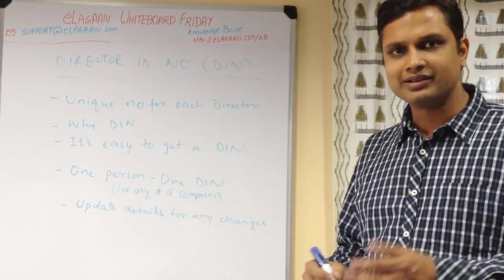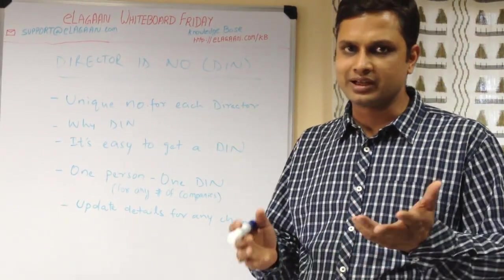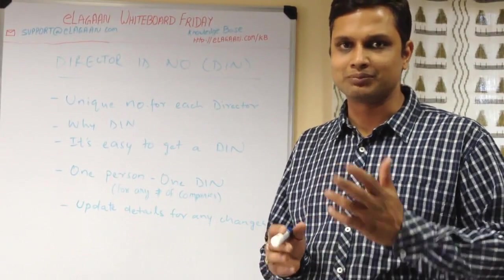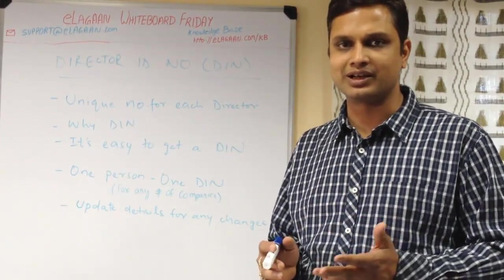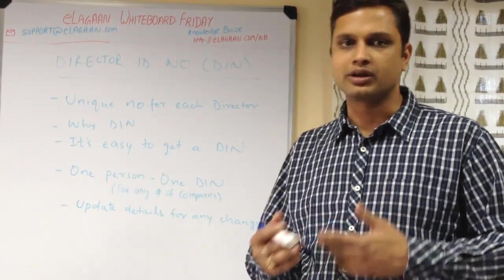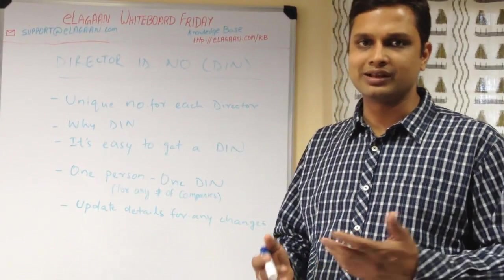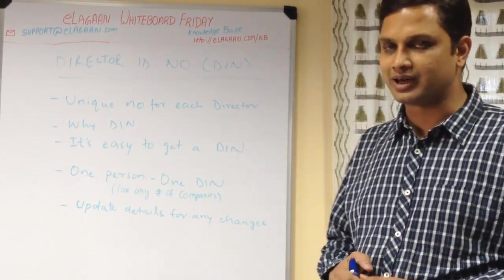A DIN essentially contains a lot of details like your full name, your father's name, date of birth, PAN card, passport, email address, and your current and permanent address — and even your photograph.